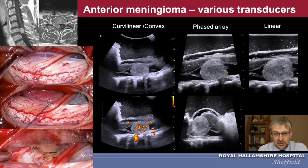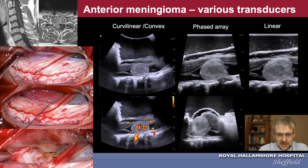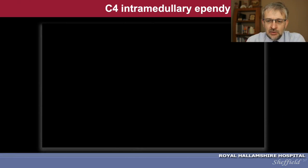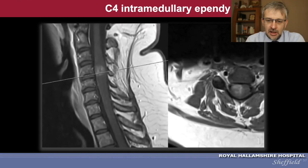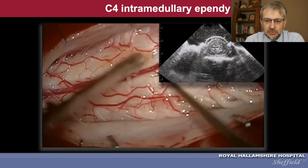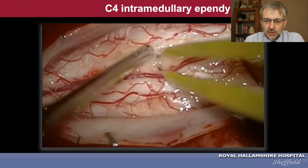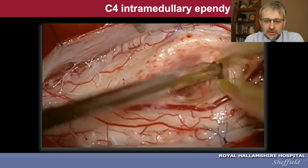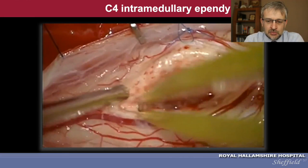For a tumor located anterolaterally to the spinal cord, dividing the dentate ligament allows you to rotate the spinal cord slightly, expanding the window to the tumor — done under intraoperative monitoring guidance. In intramedullary tumors it is extremely important to know with 100% certainty where the tumor is located, as the spinal cord may look completely normal on the surface. In ependymomas with capping cysts, you need to accurately locate the top and bottom ends of the tumor as well as the cysts, which are helpful for tumor dissection.